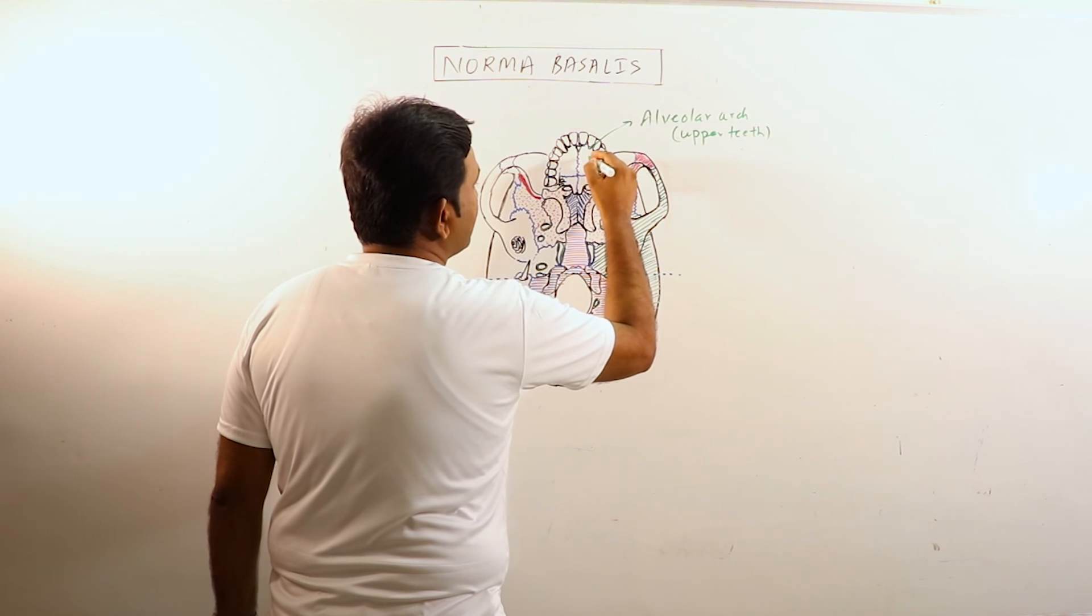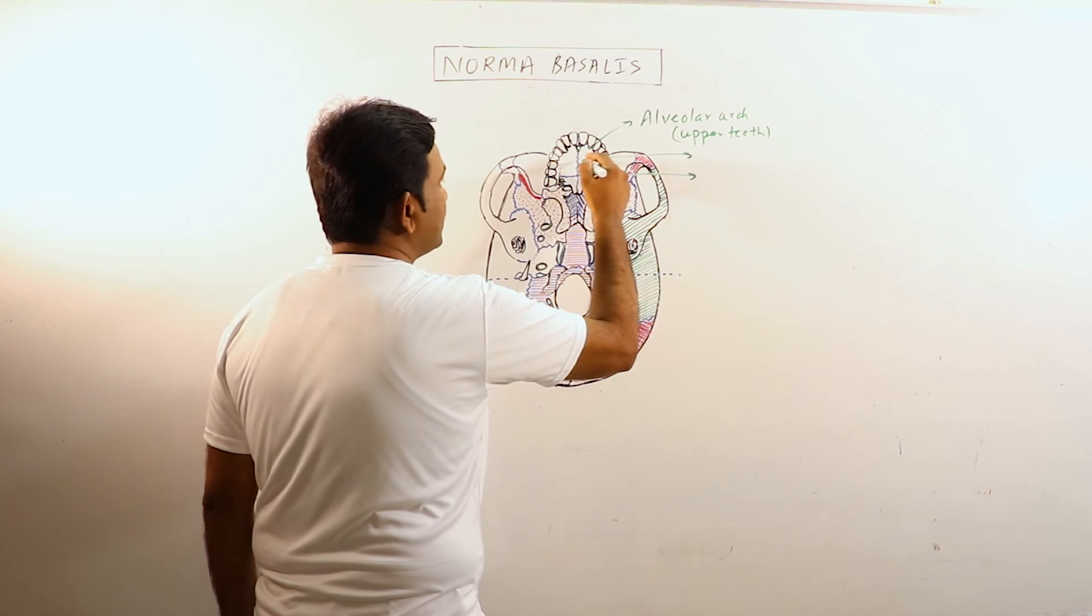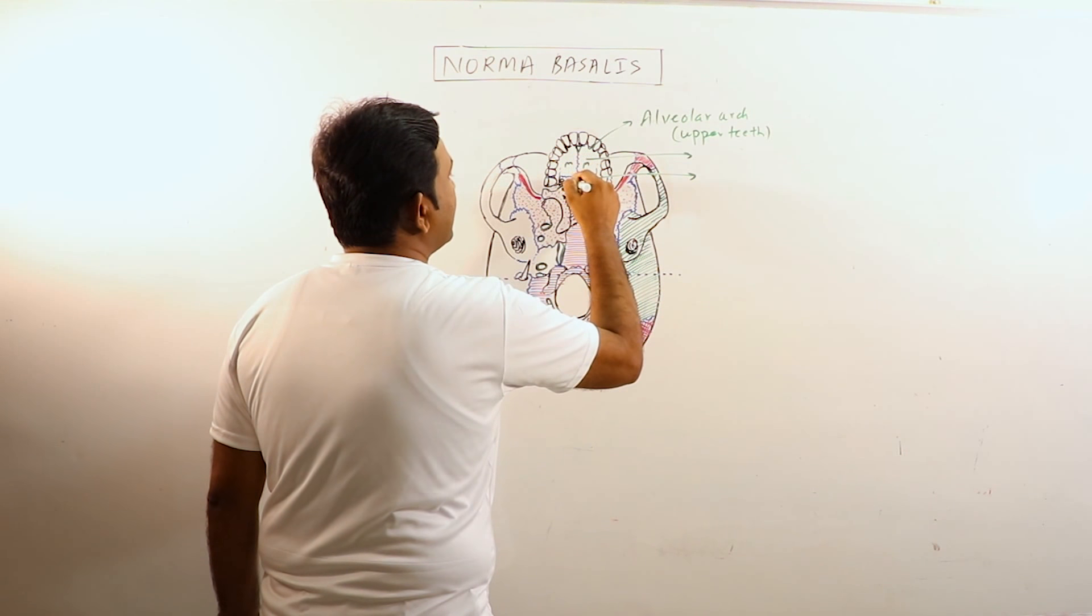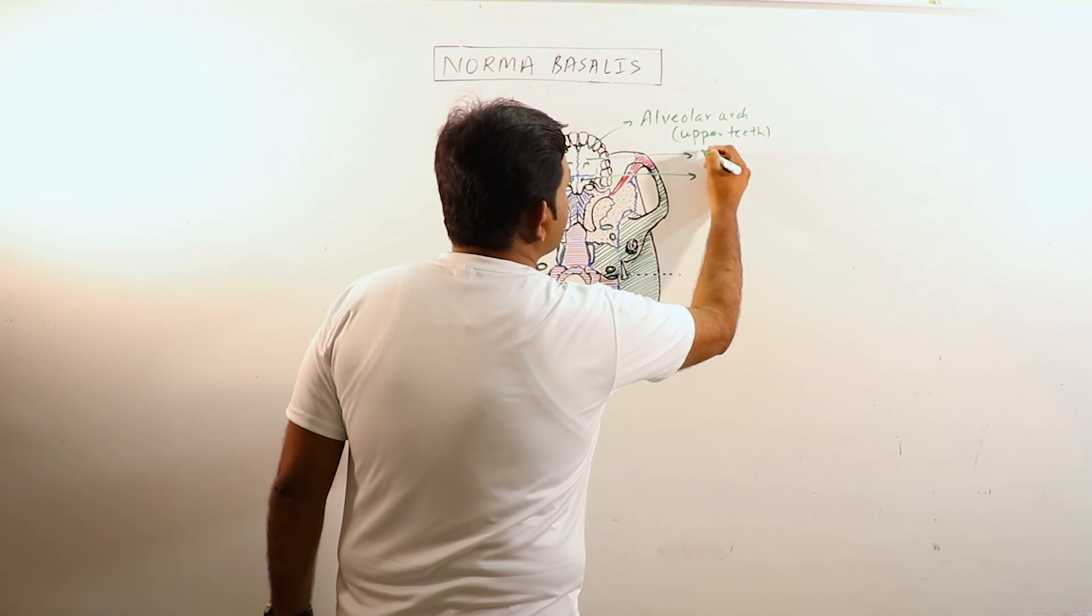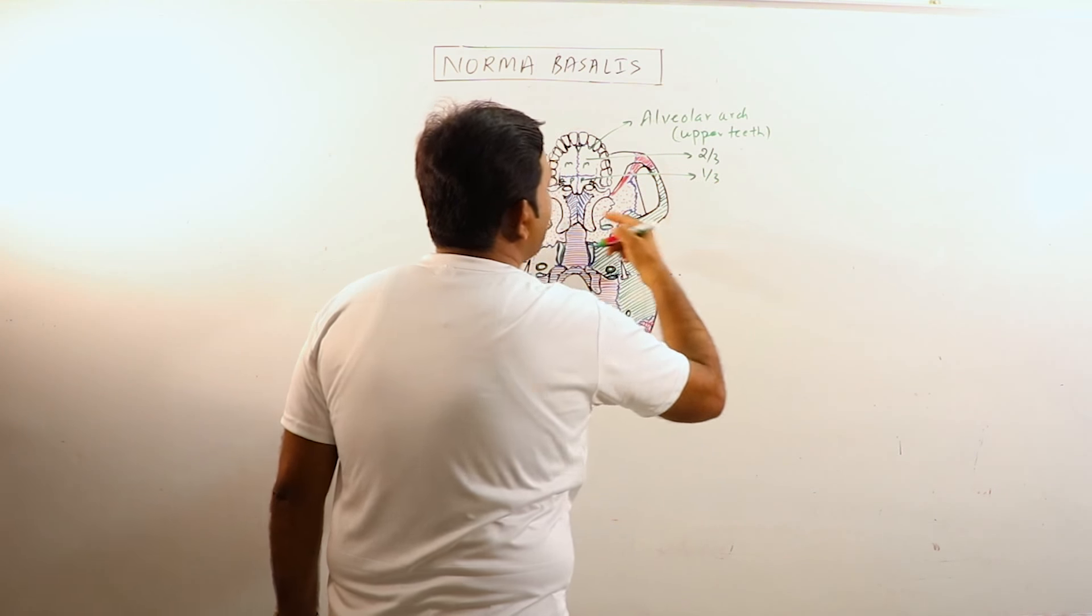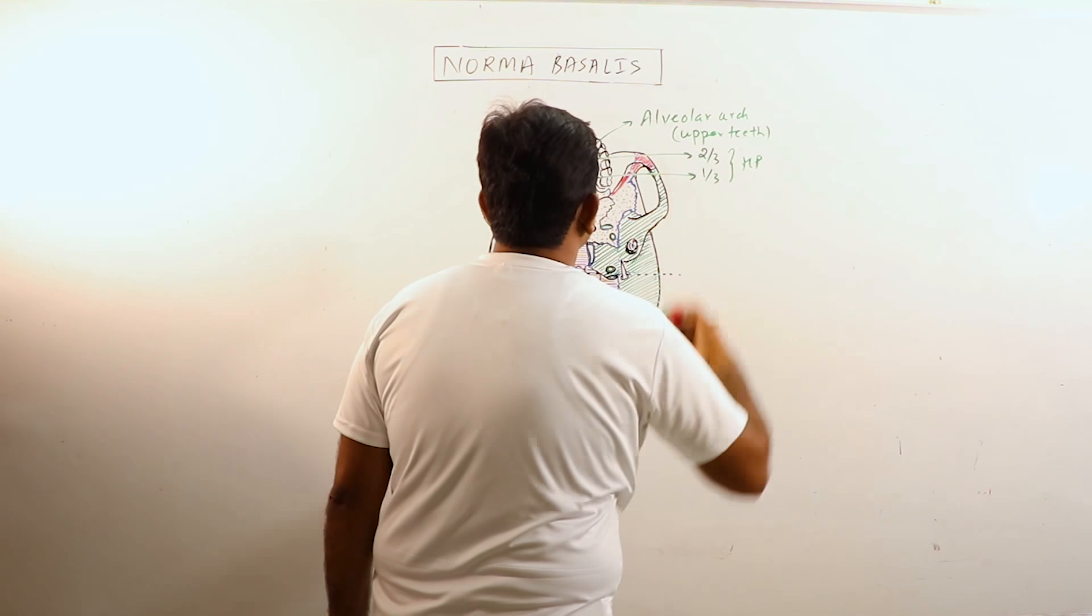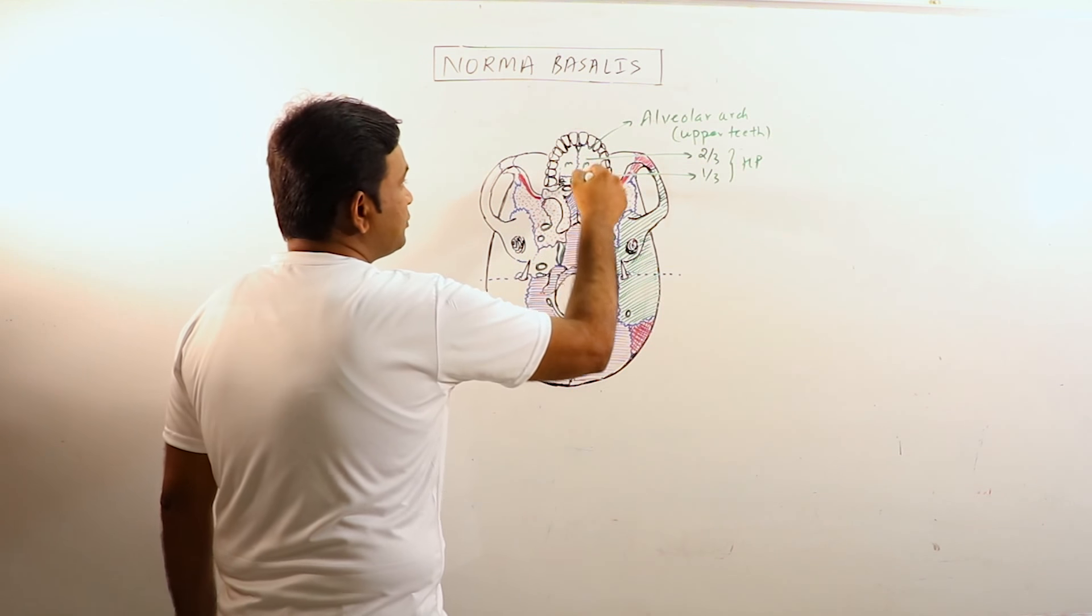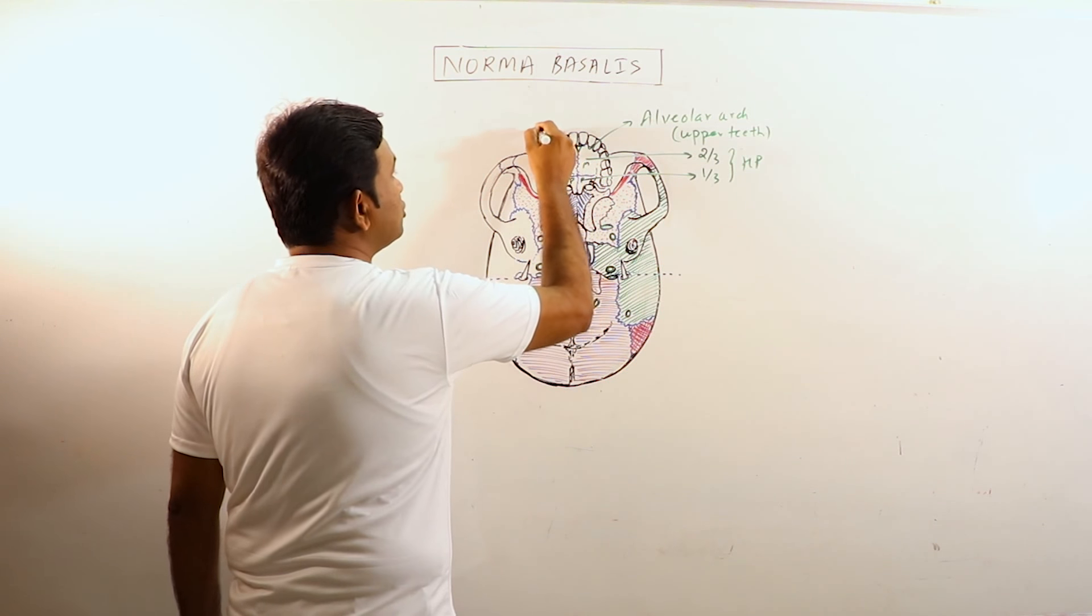Now this is hard palate. Hard palate is formed by these two bones - this one is maxillary and this one is palatine. So maxillary bones form the anterior two-thirds of hard palate and the palatine bones form the posterior one-third of the hard palate. Hard palate is basically crossed by a cruciform suture.